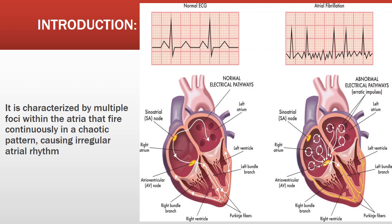This chaotic firing causes an irregular atrial rhythm. You can see the normal heart picture and the normal electrical pathway; however, in the abnormal one, you can see erratic impulses producing from the left atrium, with multiple foci firing electrical impulses, leading to atrial fibrillation.